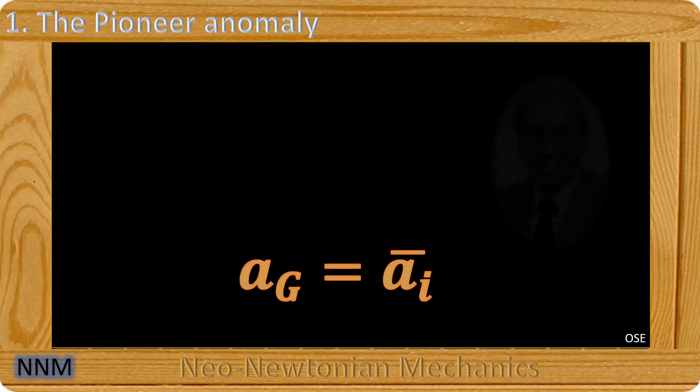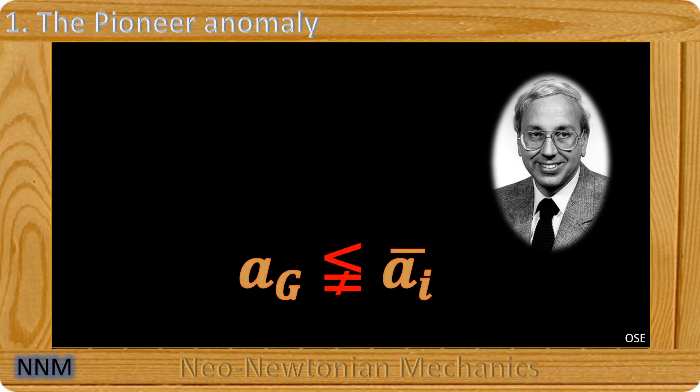The only known external force acting on the probe is gravity g, we must therefore have AI equals AG. And it was Dr John Anderson who found the body, a gap between AI and AG.